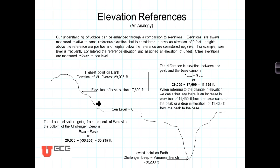We can calculate that change in elevation by taking the elevation at the highest point and subtracting the elevation at the base station. We find there's an 11,435-foot increase in elevation above the base station.